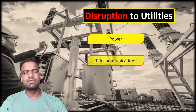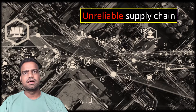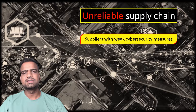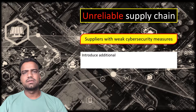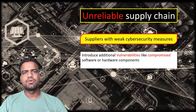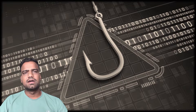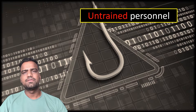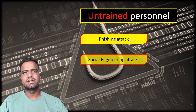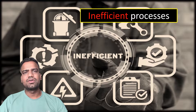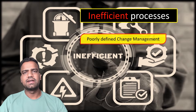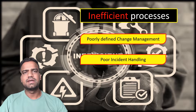Other vulnerability areas include disruption to utilities like power and telecommunications, and an unreliable supply chain. When you are dependent on suppliers with weak cybersecurity measures, that can introduce vulnerabilities — compromised software or hardware components may be integrated into your organization. Untrained employees may fall victim to phishing or social engineering attacks. Inefficient processes, poorly defined change control, and incident management — or the absence of these processes — also create vulnerable situations.